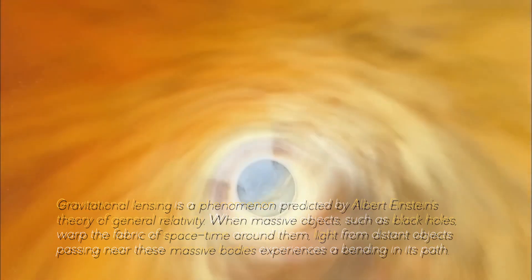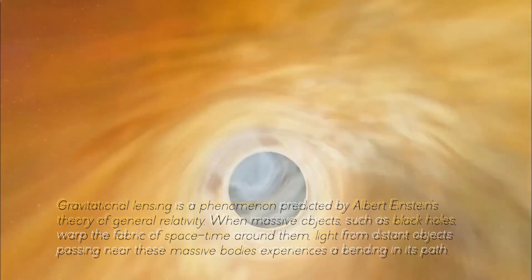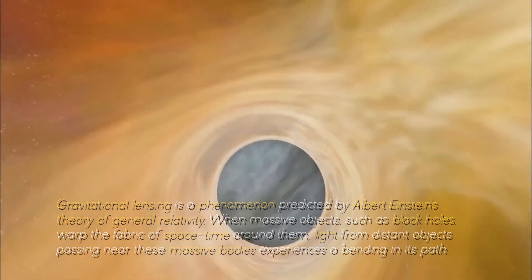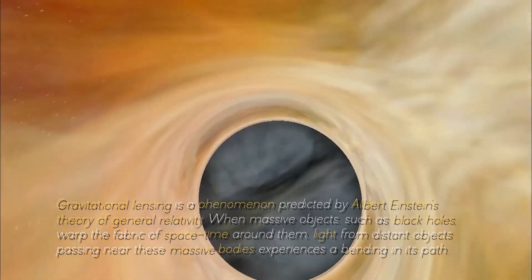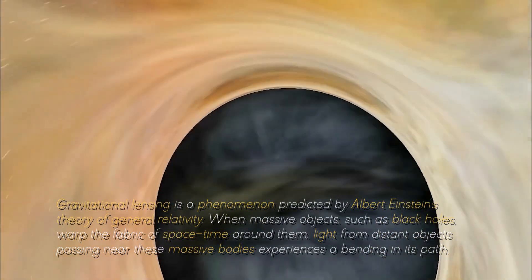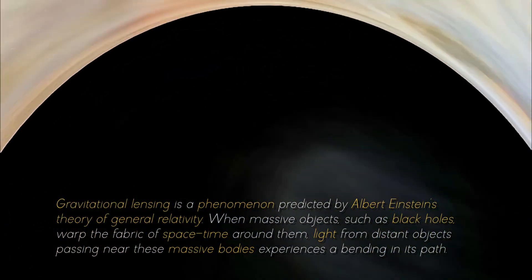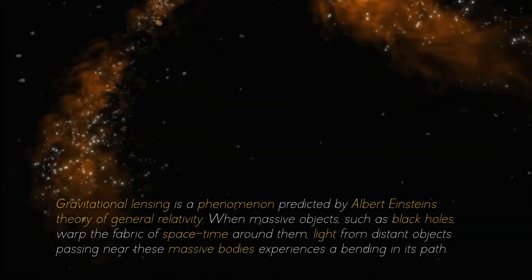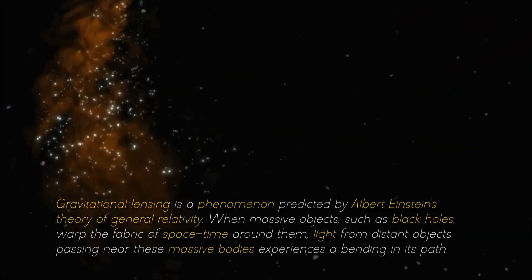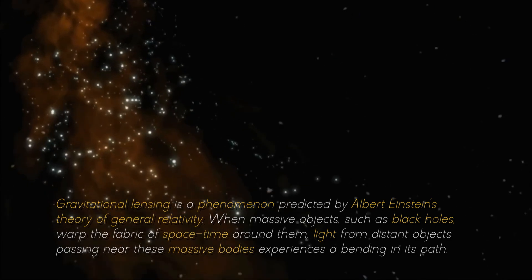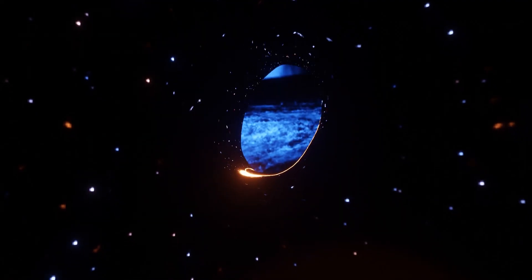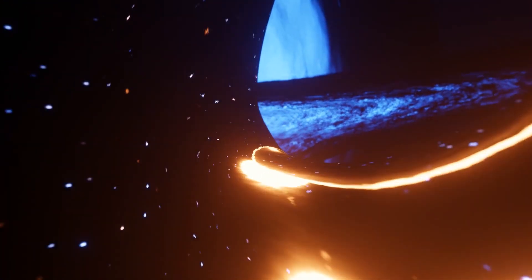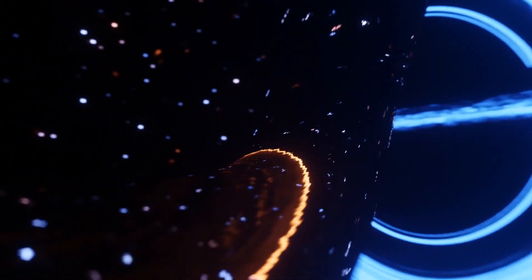Gravitational lensing is a phenomenon predicted by Albert Einstein's theory of general relativity. When massive objects, such as black holes, warp the fabric of spacetime around them, light from distant objects passing near these massive bodies experiences a bending in its path. This results in a visual distortion or magnification of the object's image.